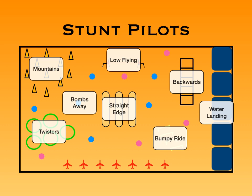Straight edge — straight balancing on the benches. Low flying — they'll have to fly underneath that rope. Mountain range — they're going to go through the mountains. Bombs away — that's the foam balls. They're all around the floor, and if they approach a ball, they can kick it.